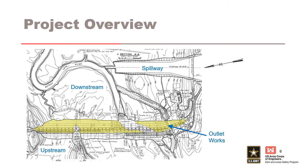The foundation rock is composed of moderately soft to moderately hard shale with interbedded sandstone and siltstones. The rock dips about 28 degrees to the north along the longitudinal axis of the dam. The thickness of the overburden in the floodplain ranges from 0 to 39 feet with an average of about 28 feet. The overburden consists of silty clays and clay silts with small sand lenses.